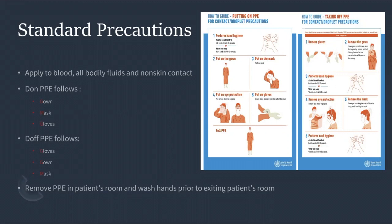Before you leave the patient's room, take off your PPE in this order: gloves, gown, and mask. For donning PPE the mnemonic is GMG — gown, mask, gloves. For doffing it's GGM — gloves, gown, mask. Make sure you wash your hands for 20 seconds before you leave the room. It's vital to keep yourself protected and prevent other patients from getting sick.